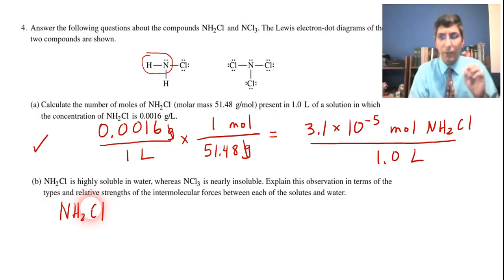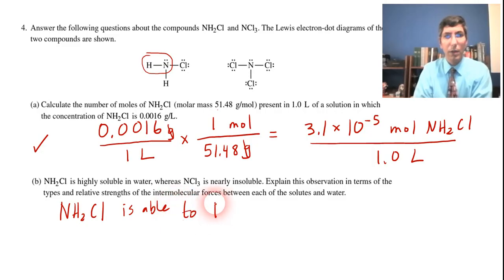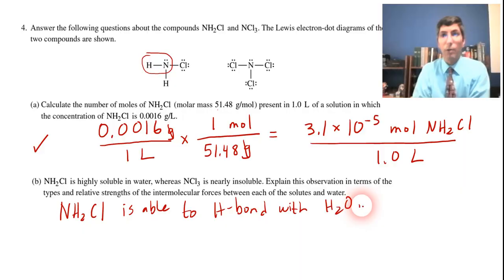So that tells us right there that the NH2Cl, the alarm bell that should go off there is that there's a hydrogen bond there. Anytime that there's an NH, an OH, or an FH bond, there's hydrogen bonding taking place. So that means NH2Cl is able to hydrogen bond with water. That's a very strong force, and so that means that normally anything that can hydrogen bond with water is going to be very soluble.